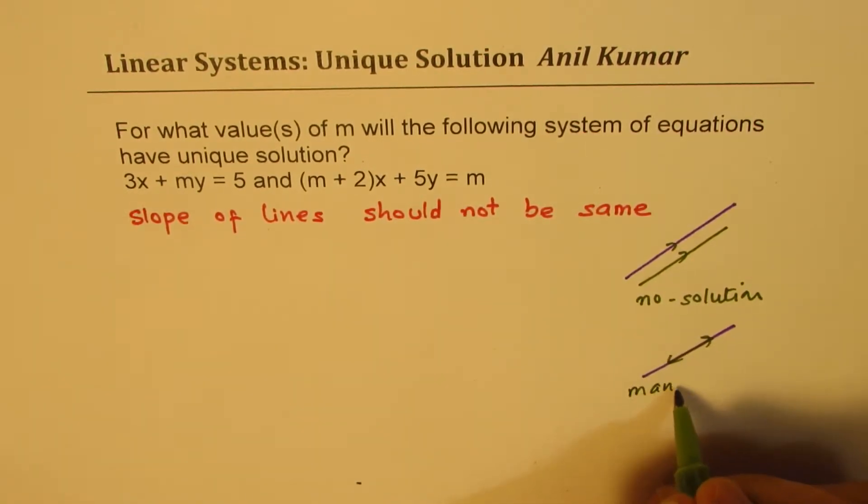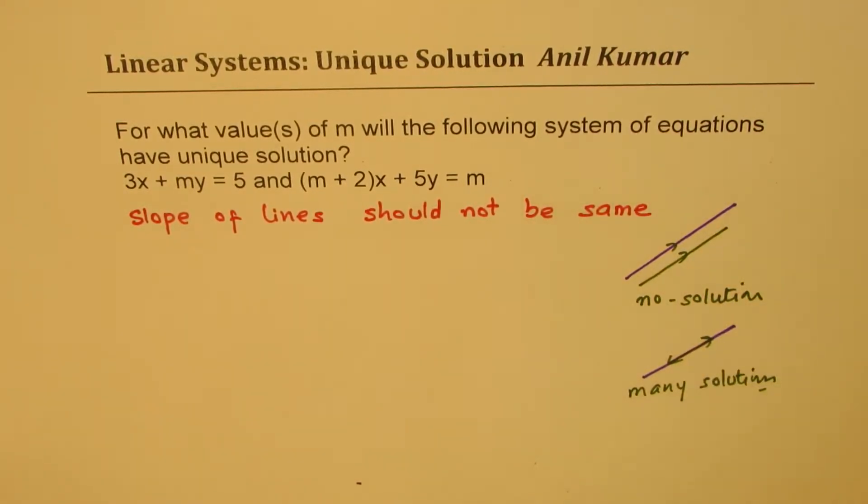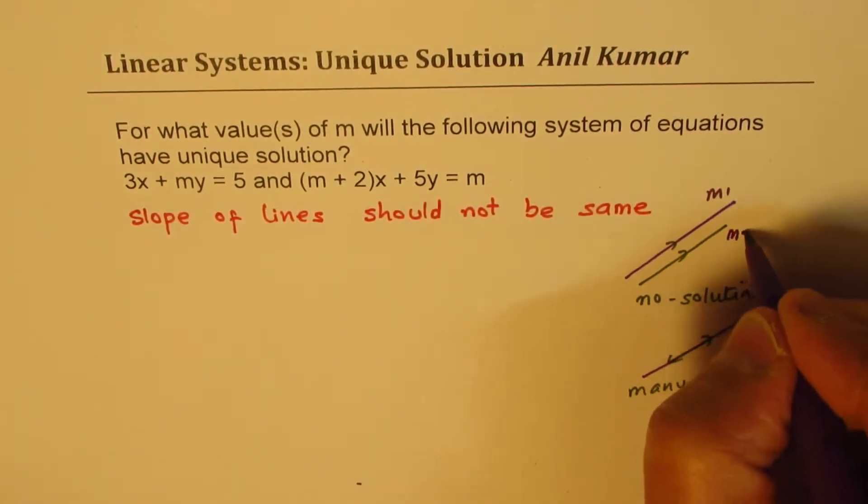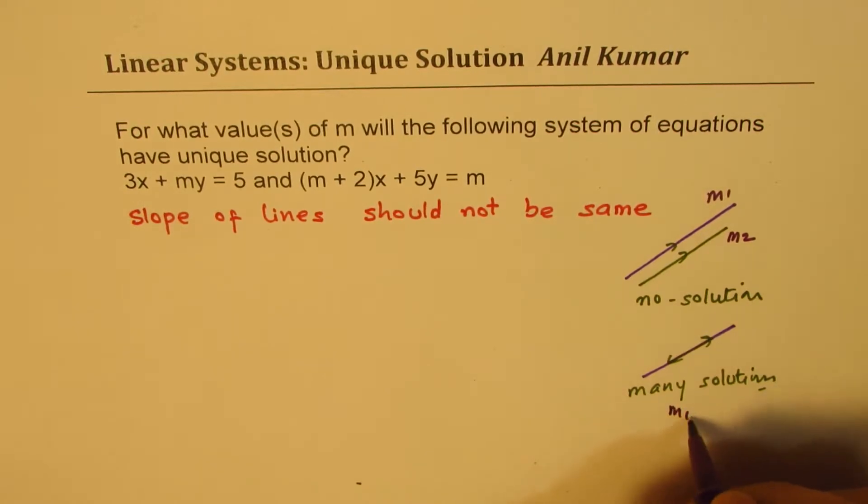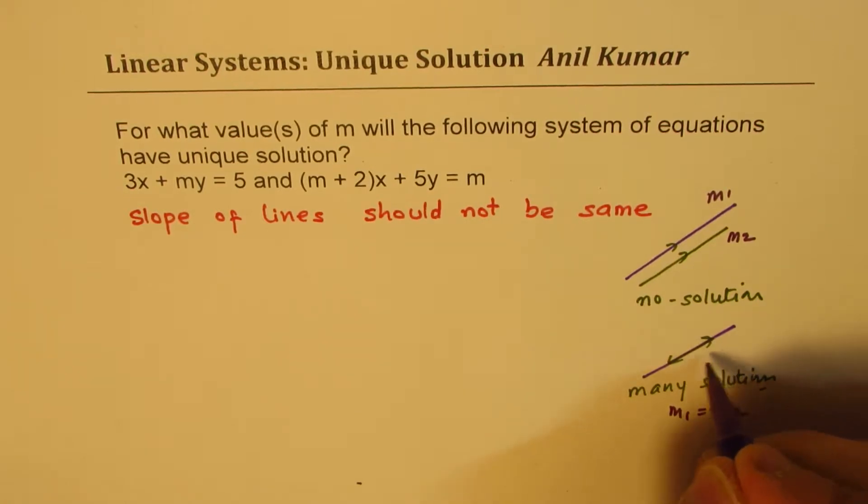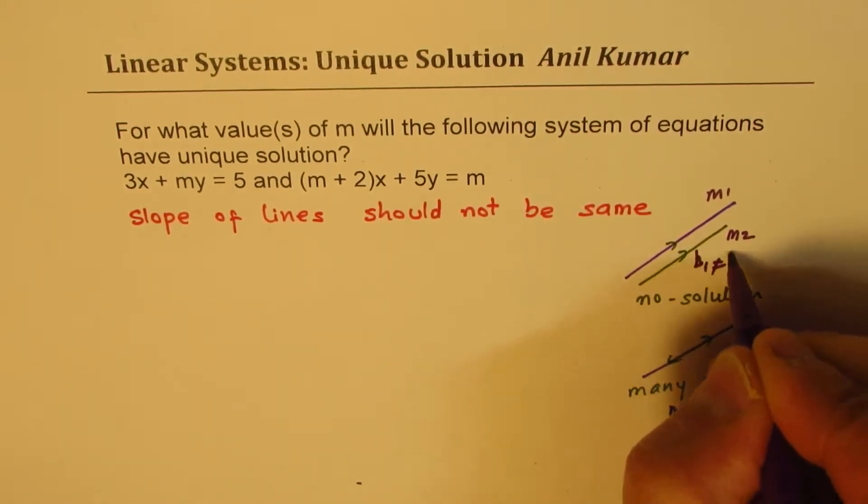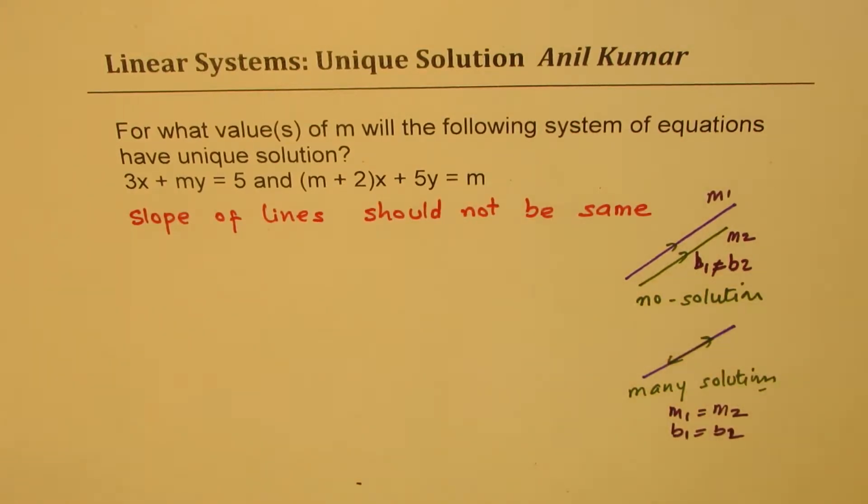Both these cases happen when the slopes, let's say m1 and m2, are the same for the lines. When m1 equals m2, in this case the y-intercepts are also same, so b1 is also equal to b2. In this case b1 is not equal to b2, where b's are the y-intercepts.